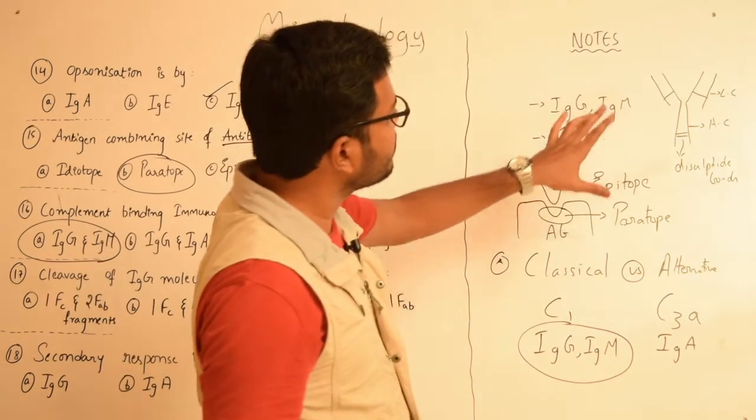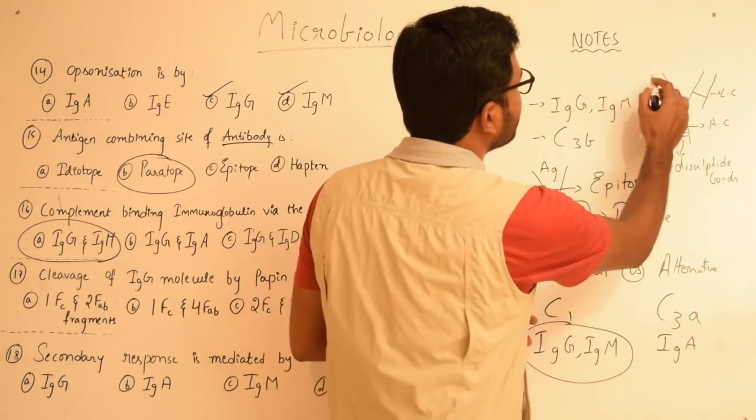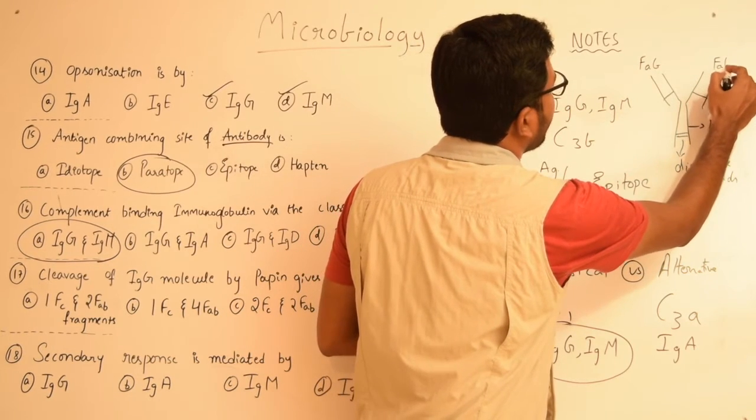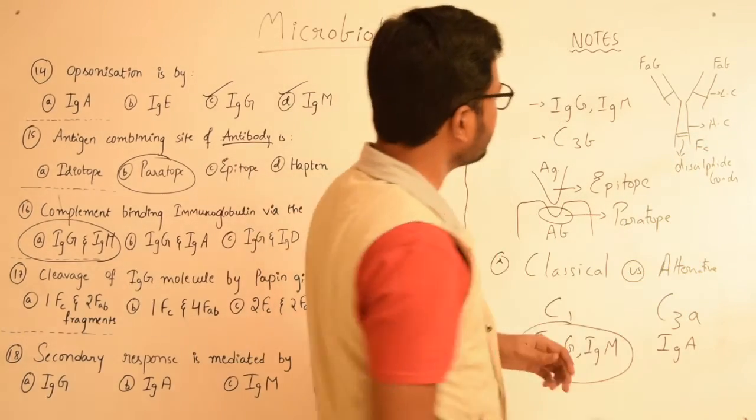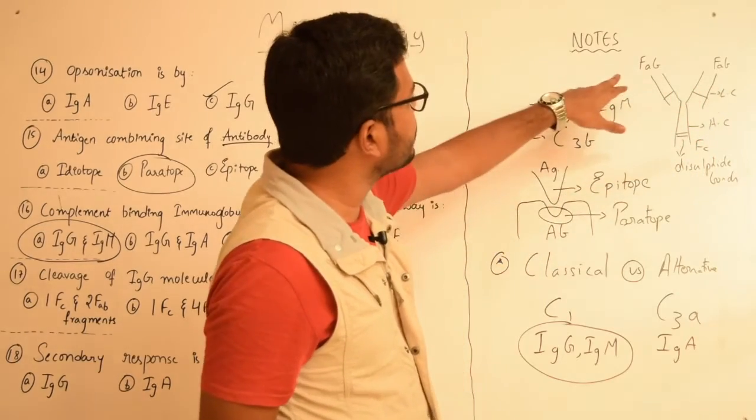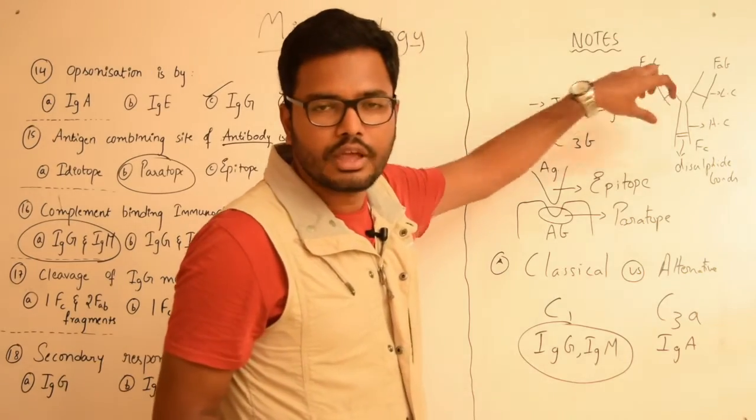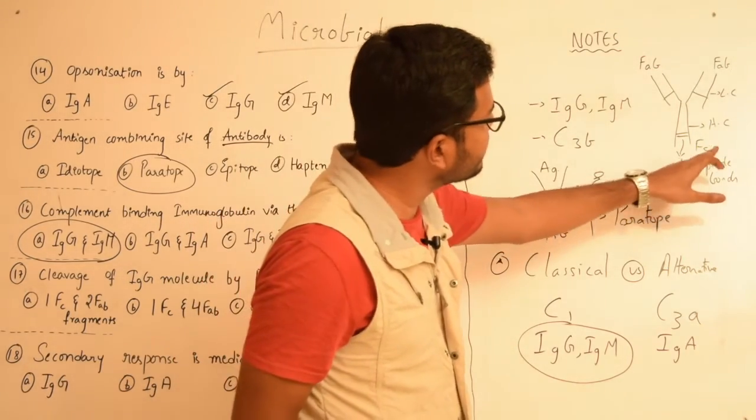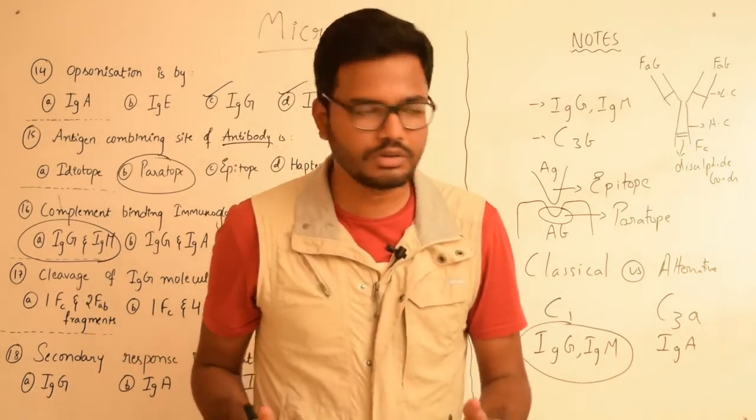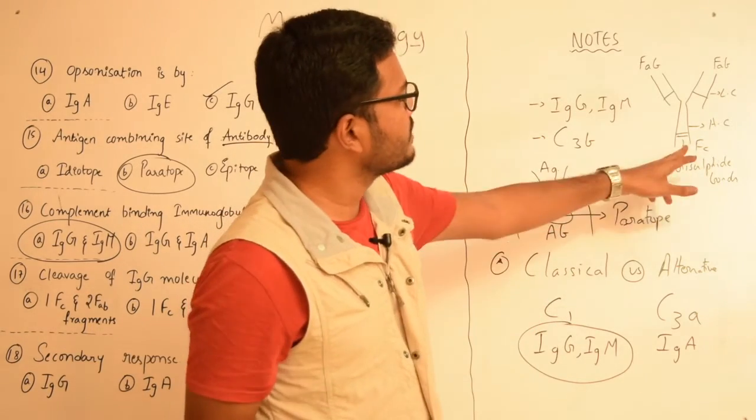As you can see we have three domains here: two here and one here. These two domains are called FAB and this domain is called FC. So these FAB domains which are two in number are responsible for antigen binding, so they form the sites where antigen binds to the immunoglobulin. Whereas FC is that domain which is influencing the immunological response and it is this fragment which crystallizes during the process, so it's called FC.